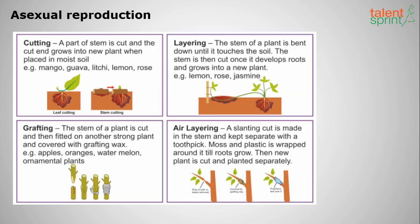The first method is cutting, which we commonly see in rose plants. A part of the stem is cut and the cut end is placed in moist soil, where it grows into a new plant. This method is generally used for rose plants, lemon, lychee, guava, and mango.